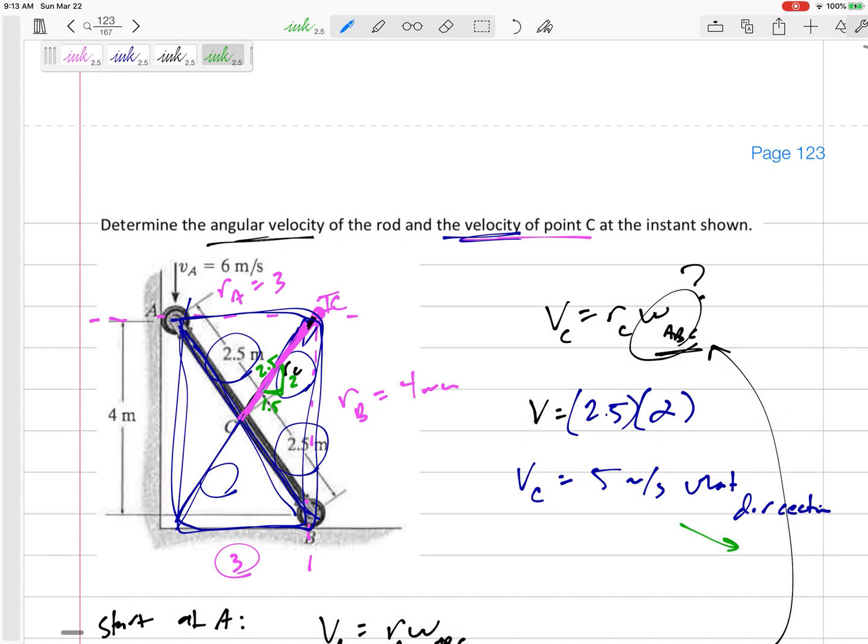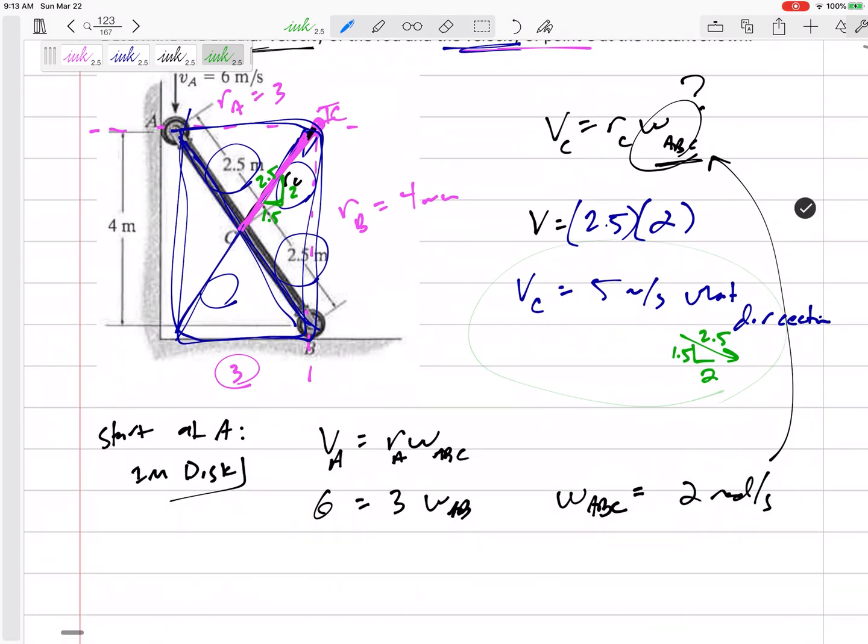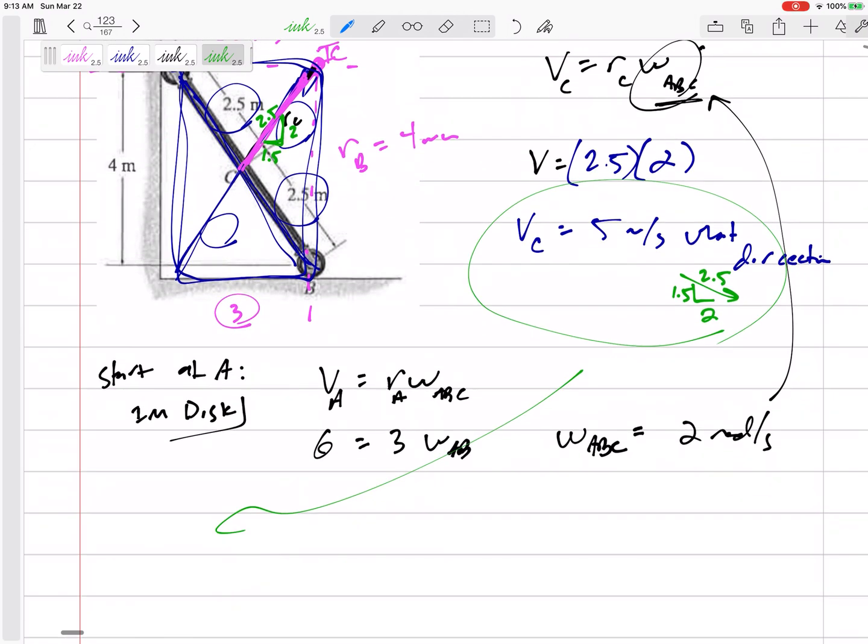So my velocity would be perpendicular to that. Let's switch the x and the y: 2 by 1.5 by 2.5. Alright. So let's just get that, pull that out right here.